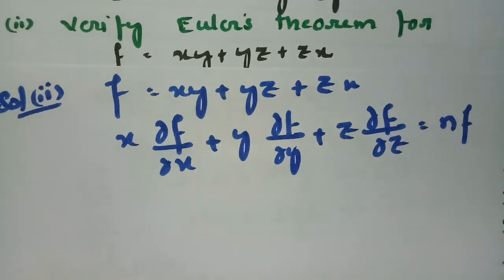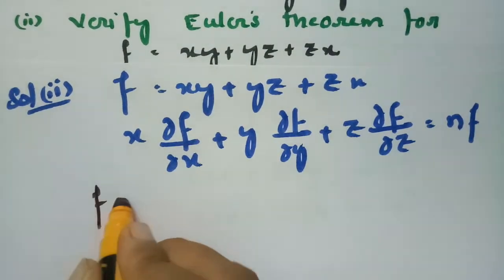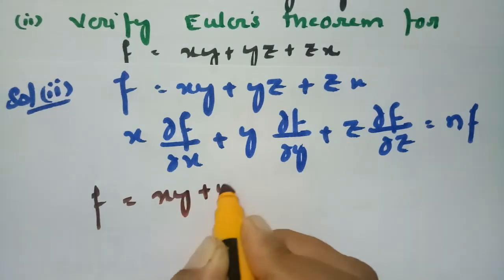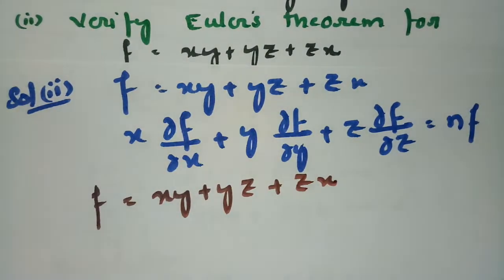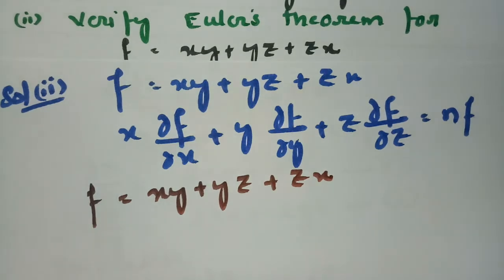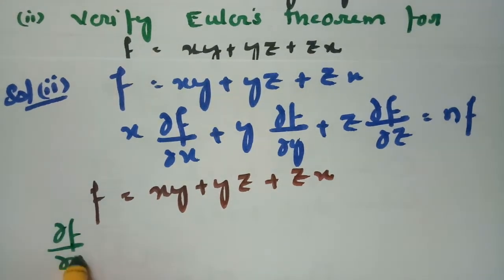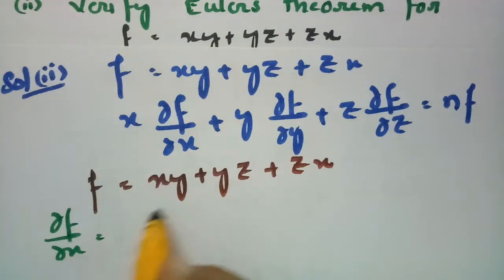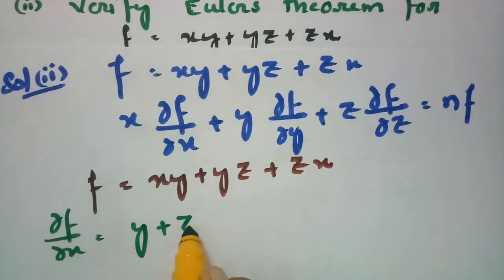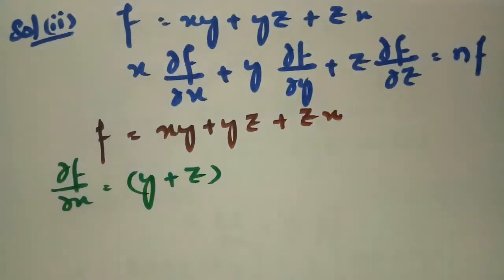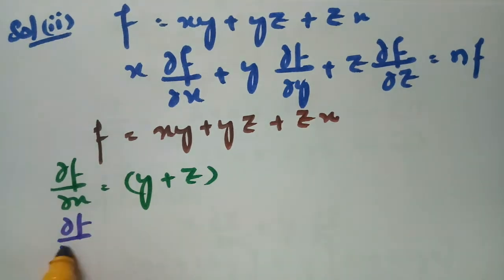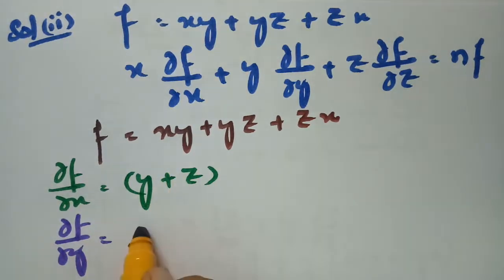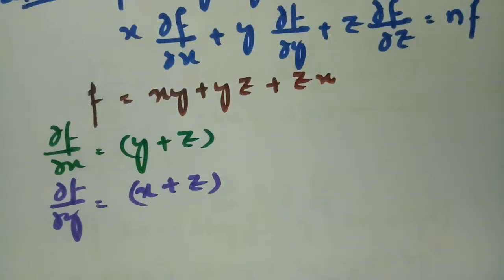First, the derivative with respect to x: f equals xy plus yz plus zx, so ∂f/∂x equals y plus z. Next, ∂f/∂y: for the xy term, x remains; for the yz term, z remains. So ∂f/∂y equals x plus z.